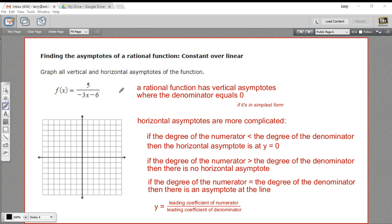In this problem, that's all we have to do. We just have to graph the vertical and horizontal asymptotes. Now the rules for these vertical and especially the horizontal asymptotes, they get a little complicated, so we'll take this a step at a time.